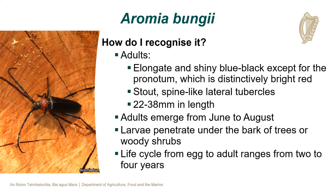The adults of Aromia bungii have elongated shiny blue-black bodies except for the pronotum, which is distinctively bright red. The adults have stout spine-like lateral tubercles and are generally 22–38 mm in length. The adults emerge from June to August. The larvae penetrate under the bark of trees or woody shrubs, and the life cycle from egg to adult ranges from 2 to 4 years.